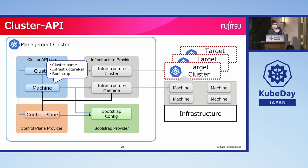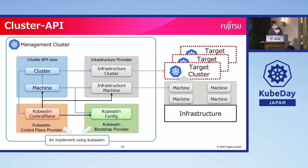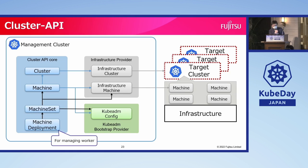The bootstrap provider will then know it needs to generate bootstrap data for that machine, and the infrastructure machine controller will use that data to request a machine and bootstrap it into a Kubernetes node. Sample implementations by the Cluster API community use kubeadm to bootstrap a machine. When creating worker nodes, Cluster API defines two more CRDs: MachineDeployment and MachineSet. Their logic is similar to the control plane provider, and the relationship between them is just like pods, ReplicaSets, and Deployments in Kubernetes.